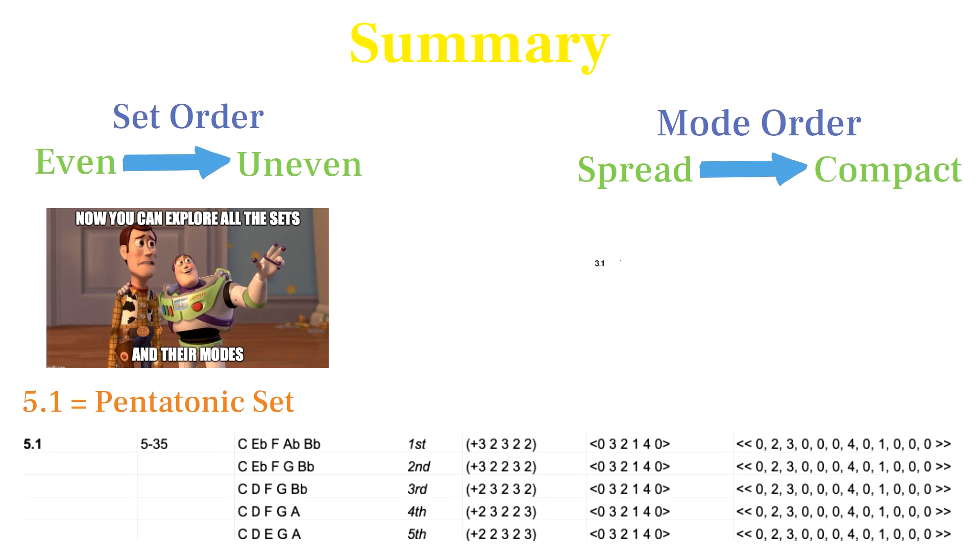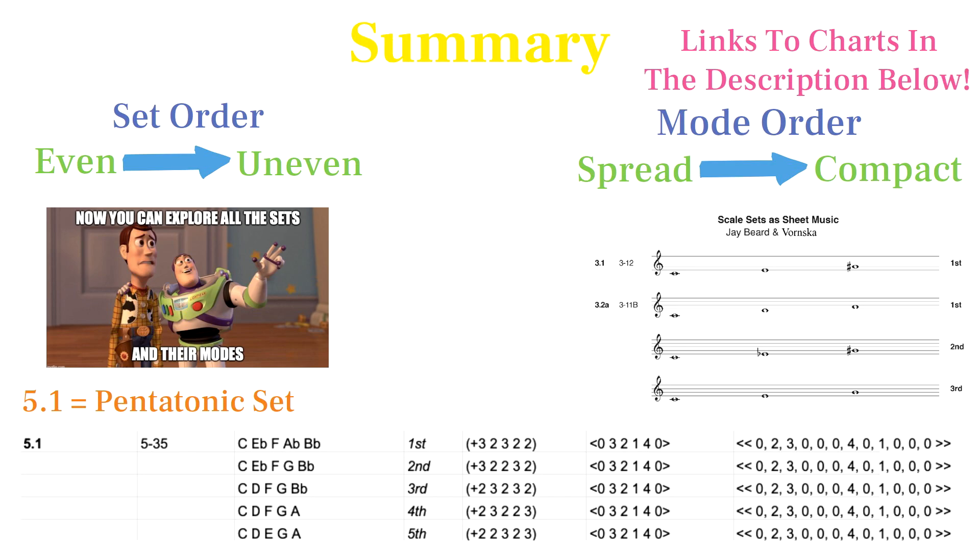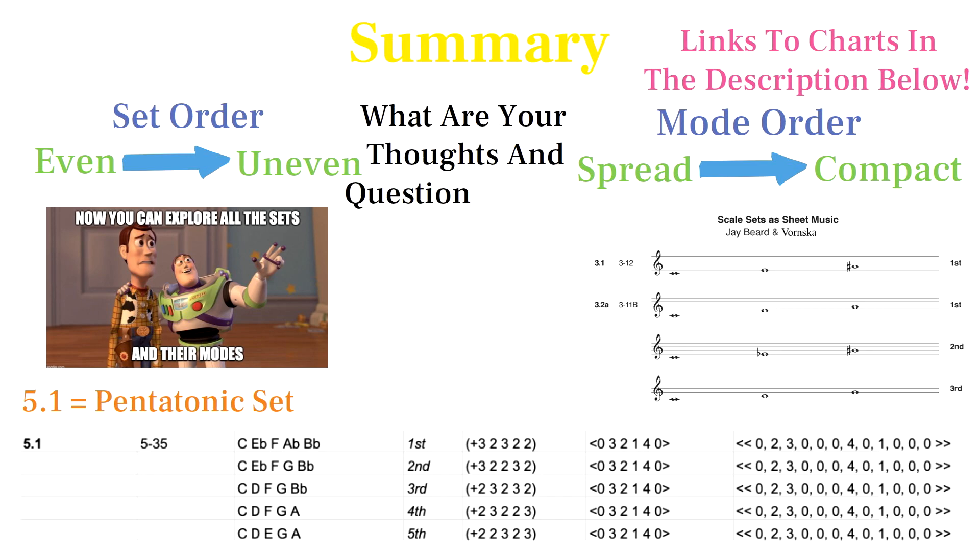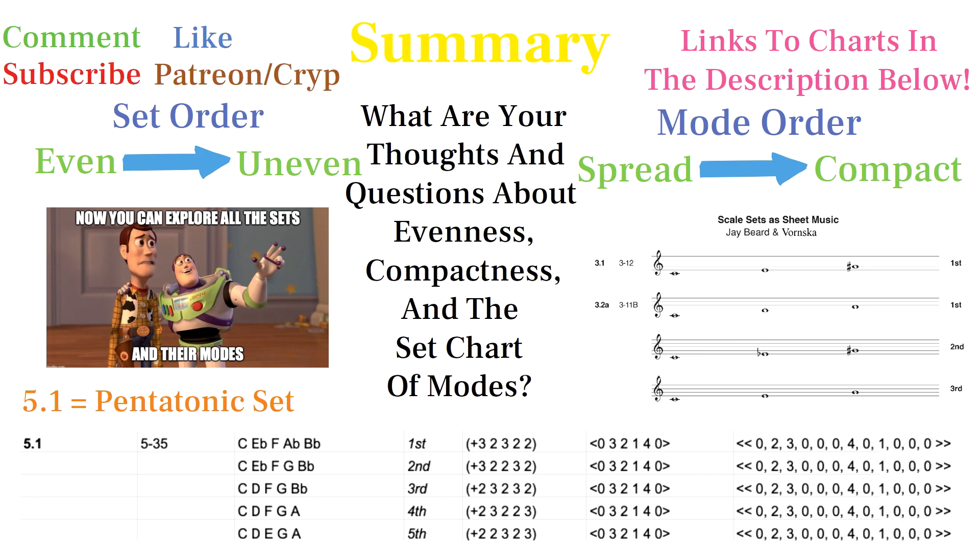If you are mostly interested in seeing each set's modes, and not the properties of sets, you can view our document set modes as sheet music which uses the same ordering system but shows the sets written out as sheet music. What are your thoughts and questions about evenness, compactness, and the set chart of modes? Let me know in the comments, like, subscribe, and support me on Patreon.